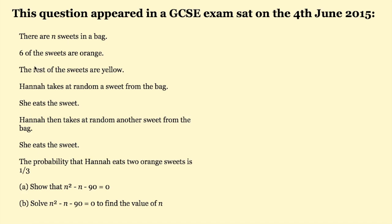Hannah takes at random a sweet from the bag and eats it. Hannah then takes at random another sweet from the bag and eats it. The probability that Hannah eats two orange sweets is one third. Part a says: show that n squared minus n minus 90 equals zero. Part b says: solve n squared minus n minus 90 equals zero to find the value of n.